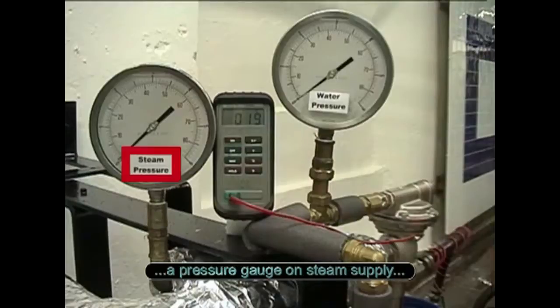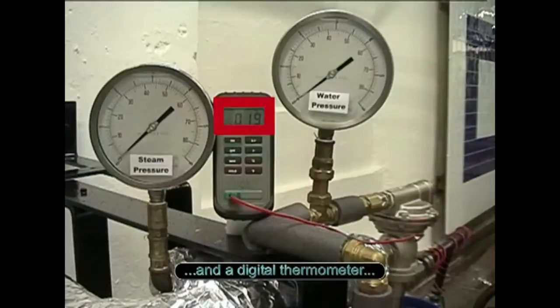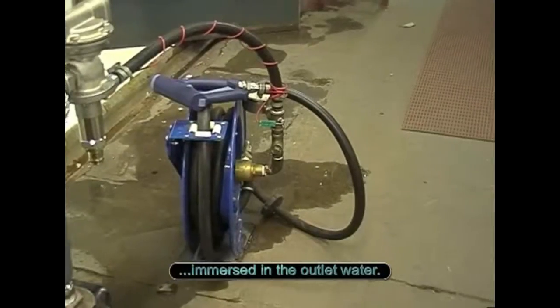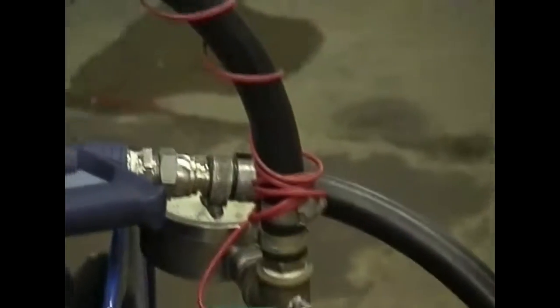The instrumentation is simple. A pressure gauge on the steam supply and on the water supply, and a digital thermometer immersed in the outlet water. The valve has been set to supply hot water at 60 degrees C.